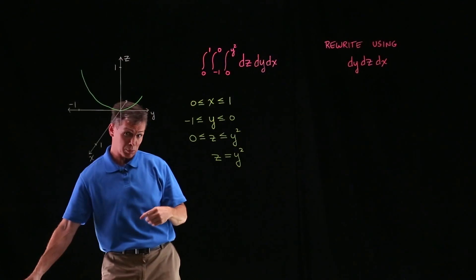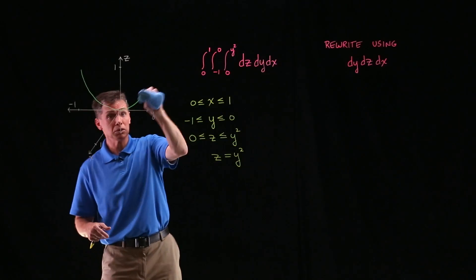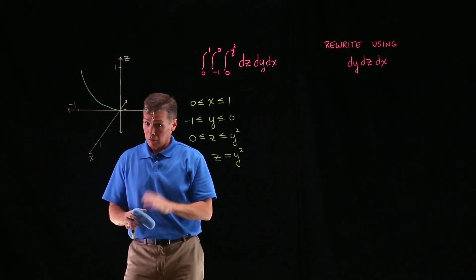And remember that we said y will not be any bigger than 0. So you're not going to be any farther to the right than the z-axis. So I can actually erase this right branch of my parabola.